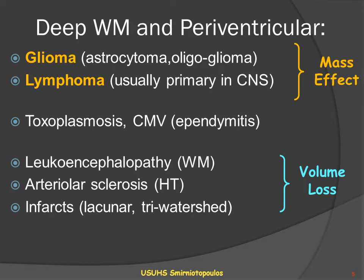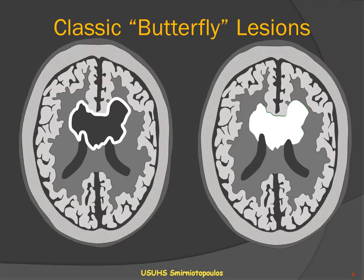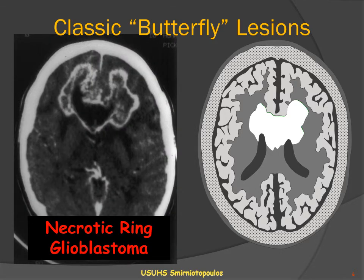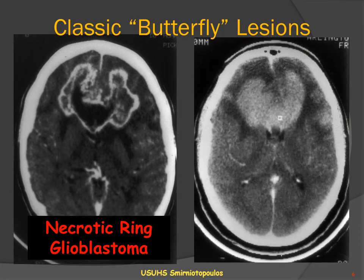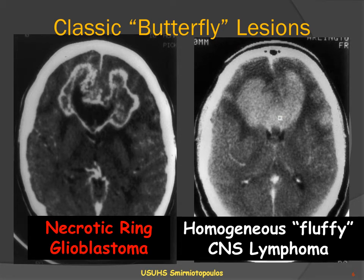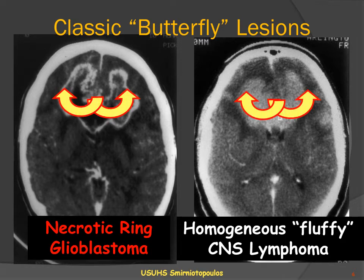However, these lesions classically are associated with volume loss. Of course, these small vessels affected by hypertension may produce hemorrhage in a similar location. The classic butterfly lesions include the necrotic ring-enhancing lesion of a glioblastoma multiforme, the highest grade of diffuse astrocytoma, as well as the fluffy hyperattenuating lesion, relatively homogeneous, for primary CNS lymphoma. Both of these lesions microscopically infiltrate and follow along the white matter tracks as they pass from side to side through the corpus callosum.